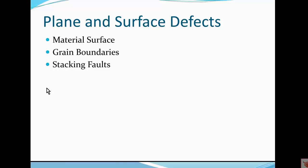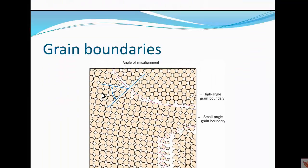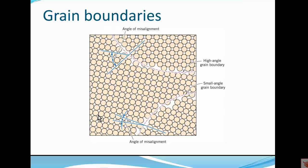The other type of surface defect we are going to look at is called a grain boundary. Looking at this image, we can see that there are three distinct regions. Within each region, there is perfect crystalline order. But the order is disrupted at what is known as a grain boundary, as we go from one region of perfect order to another. Each region of order is called a grain, and the boundary between grains is called a grain boundary.